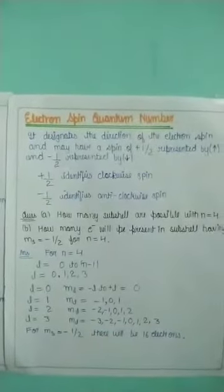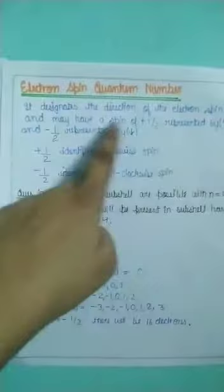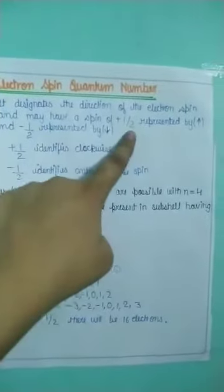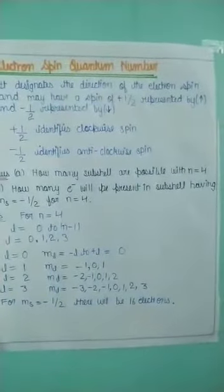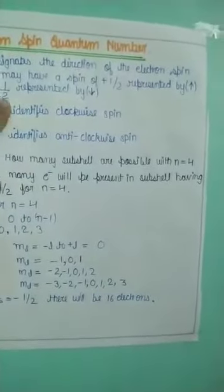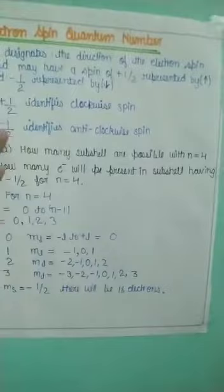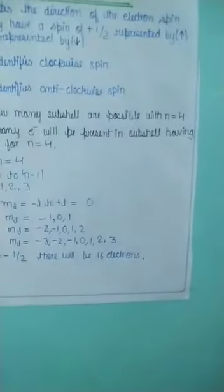The fourth is the electron spin quantum number. It designates the direction of electron spin and may have a value of +1/2, represented by an upward arrow, or -1/2, represented by a downward arrow. A value of +1/2 identifies clockwise spin and -1/2 identifies anticlockwise spin.